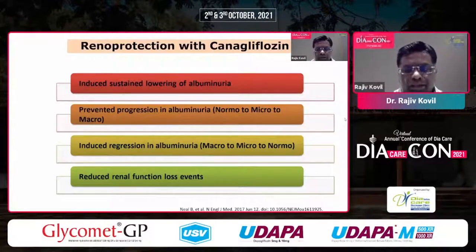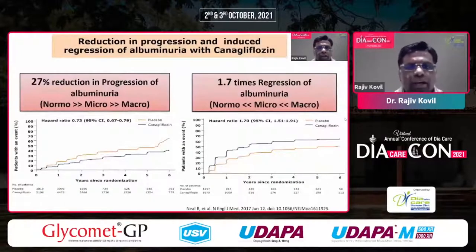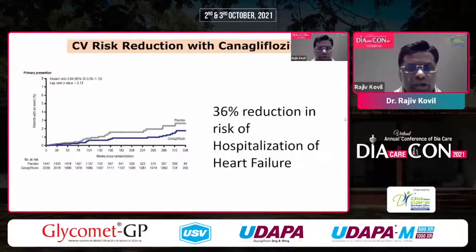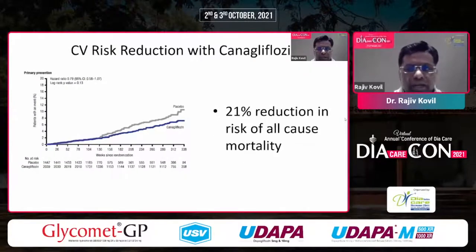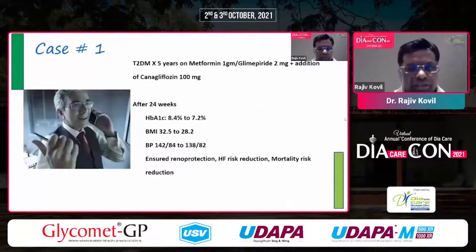We all know that eGFR reduces with albuminuria as well as with increasing duration of diabetes. From the CANVAS study, there's a 27% reduction in progression of albuminuria and 1.7 times regression of albuminuria. For CV risk reduction, there's a 36% reduction in the risk of hospitalization due to heart failure and a 21% reduction in all-cause mortality. This is why canagliflozin received the three-point MACE indication from the US FDA.